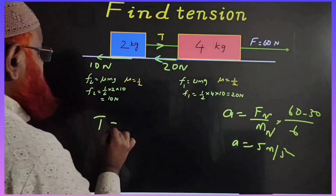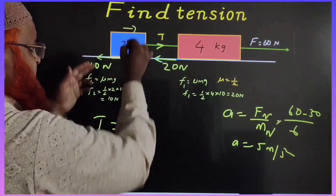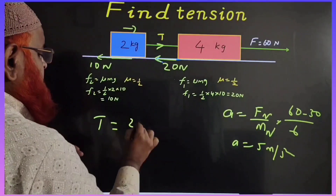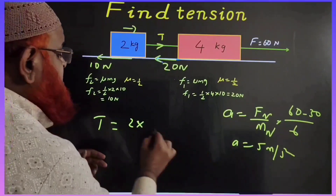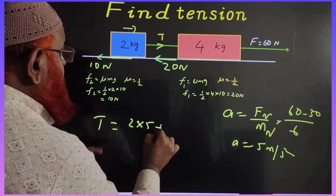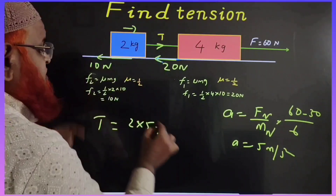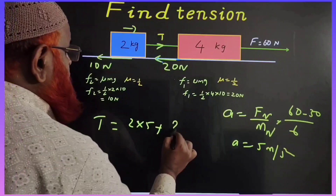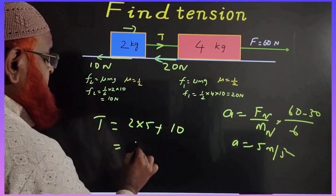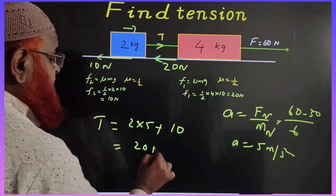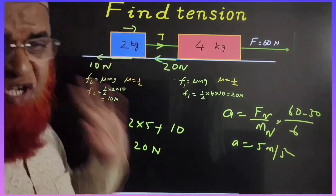If you want to find out the tension, tension is going to be mass into acceleration on this block. There is 2 into acceleration 5, plus friction which is an additional force here. Additional friction of 10N is acting. So 10 plus 10 is nothing but 20N is going to be the tension.